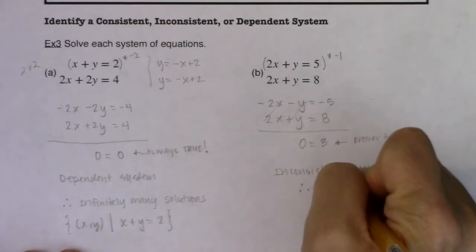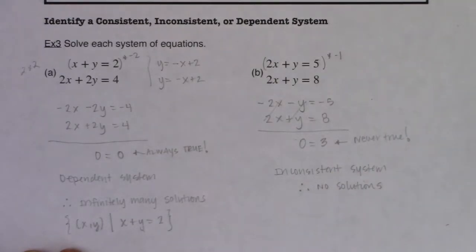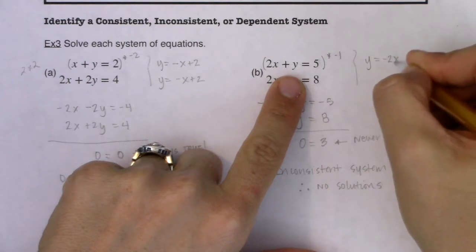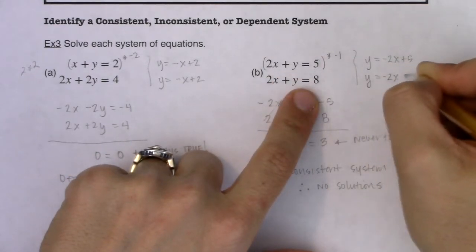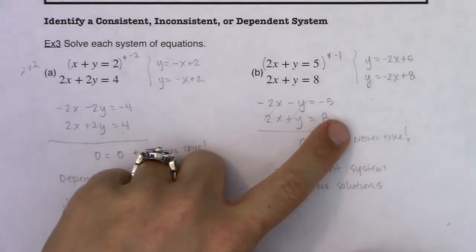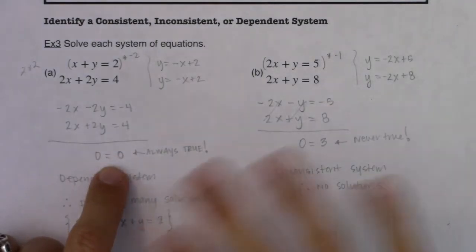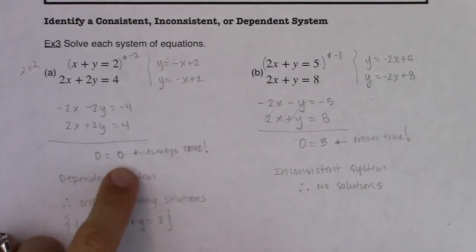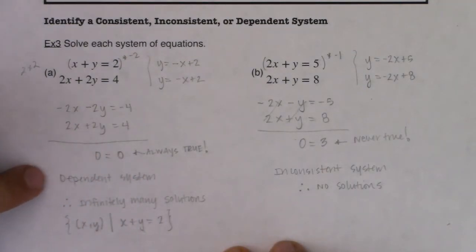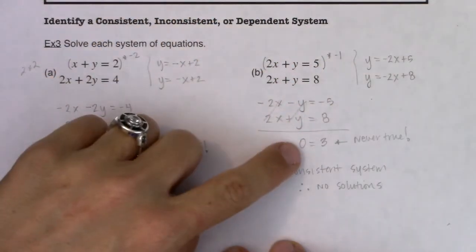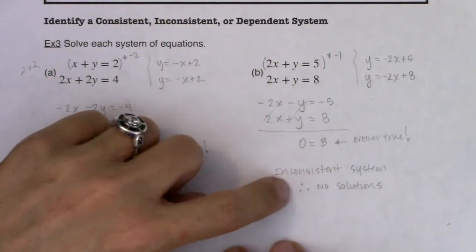There are no solutions to this inconsistent system. If you put these lines in slope-intercept form, you get y = −2x + 5 and y = −2x + 8 — parallel lines, which is why we're seeing no solution. So when you have a dependent system, you'll arrive at an equation that's inherently true. That's the algebra way of saying you've got a dependent system. On the flip side, if you arrive at something inherently false after elimination or substitution, that means you have an inconsistent system.